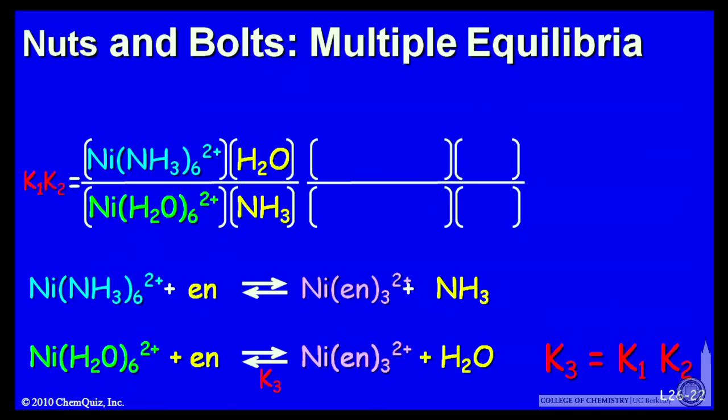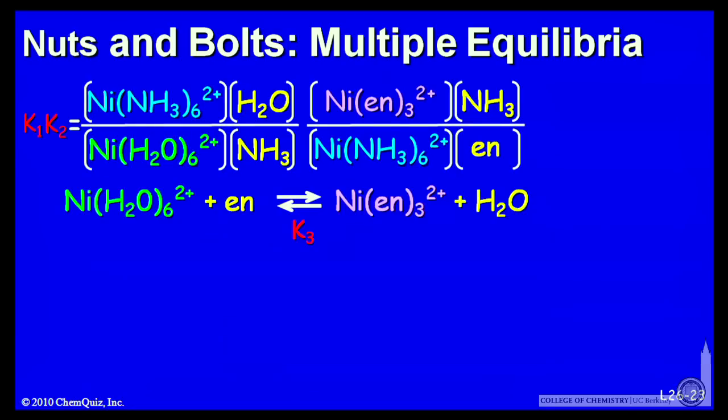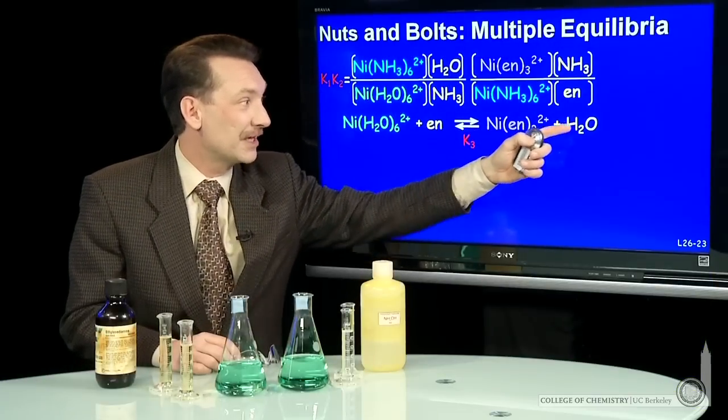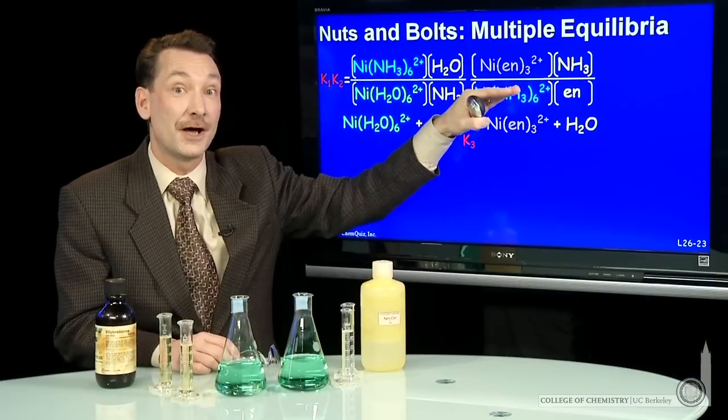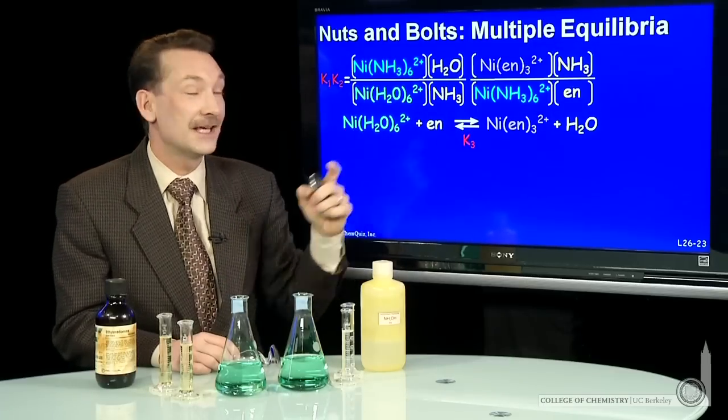I'll have these products in the numerator, the ethylenediamine complex and the ammonia complex, and these two in the denominator, the ammonia complex and the ethylenediamine. That's the product K1 and K2, which equals K3. Here's K3: ethylenediamine nickel complex and water in the numerator over reactants, the nickel hydrate and ethylenediamine.